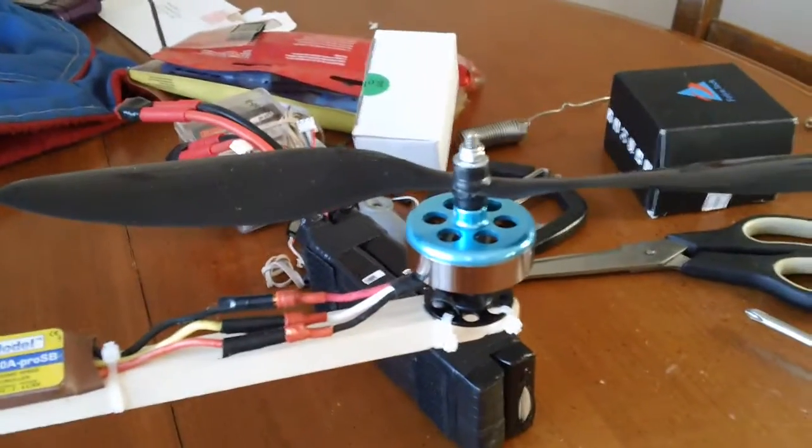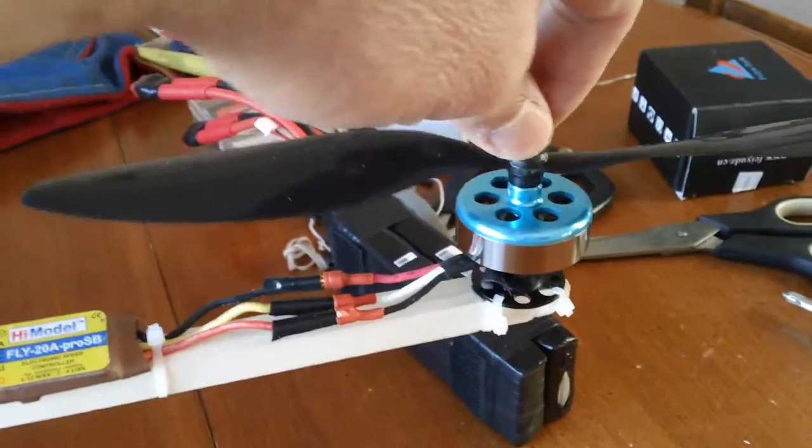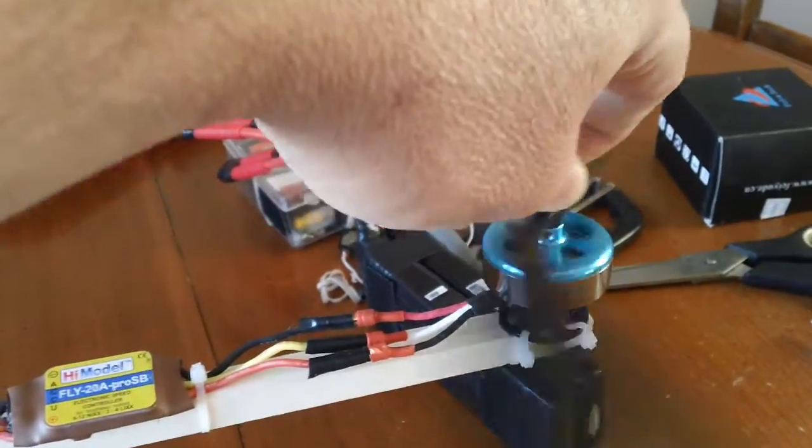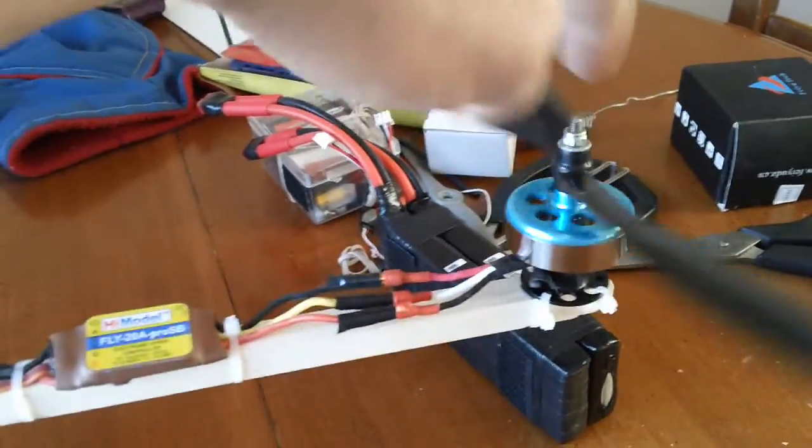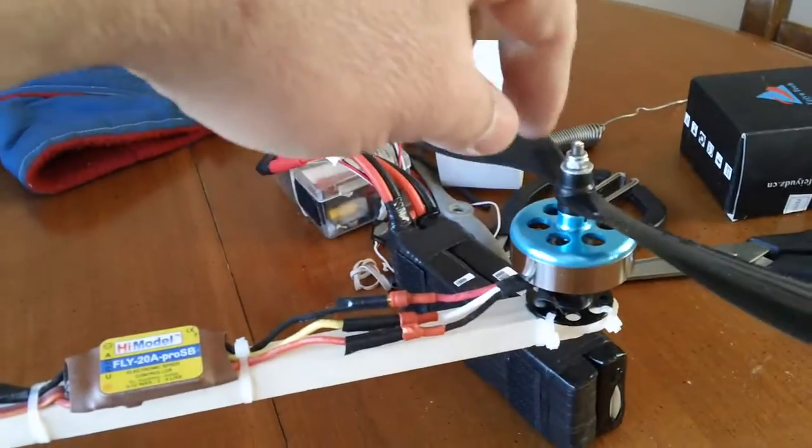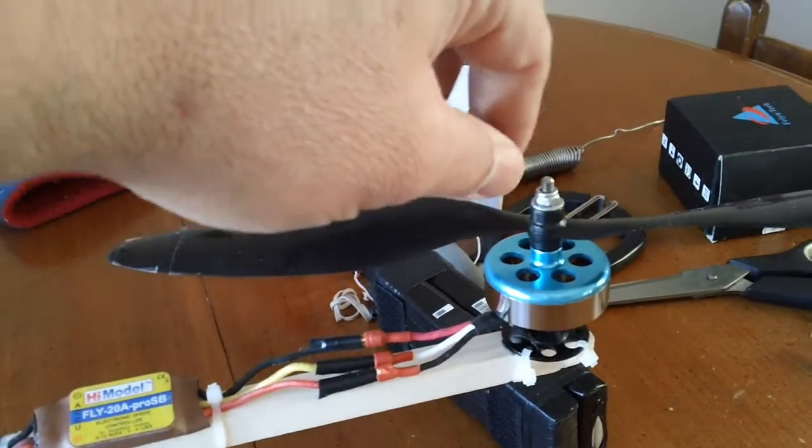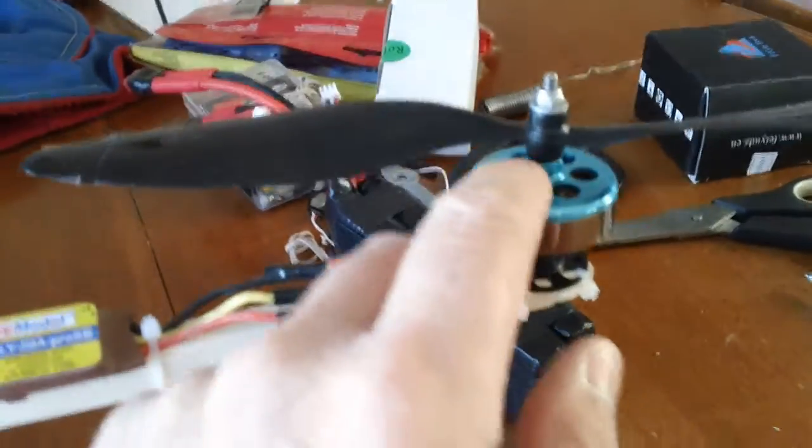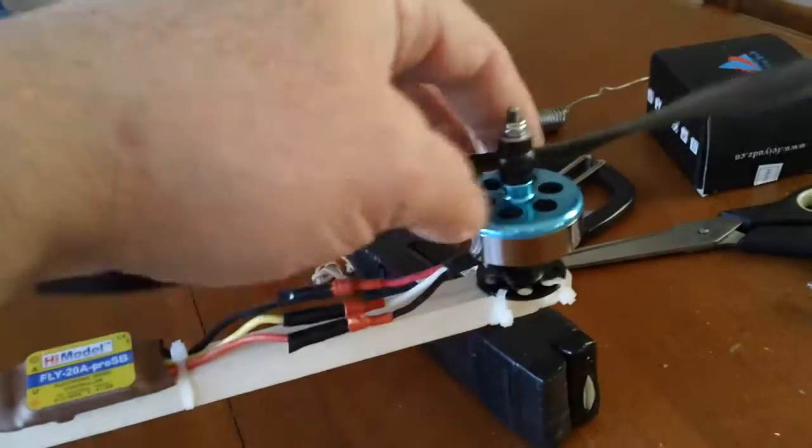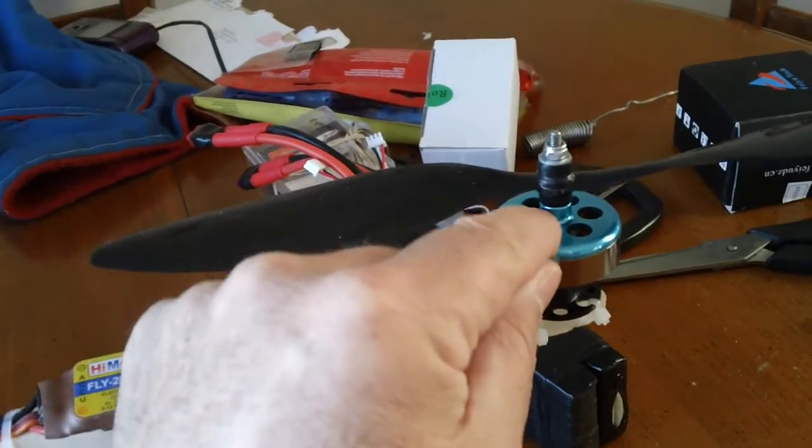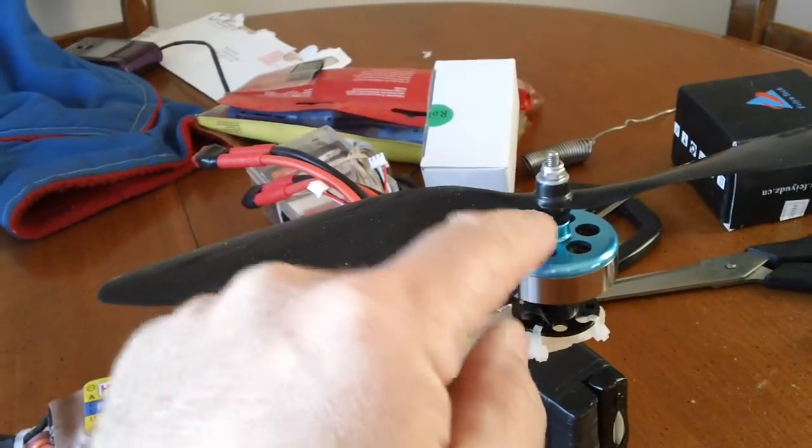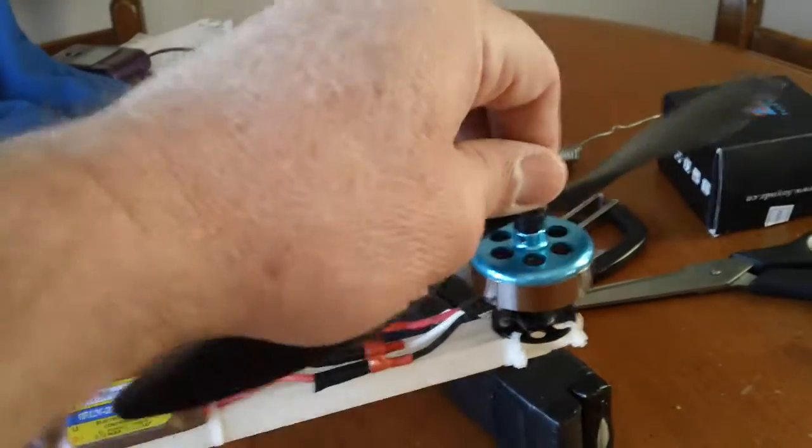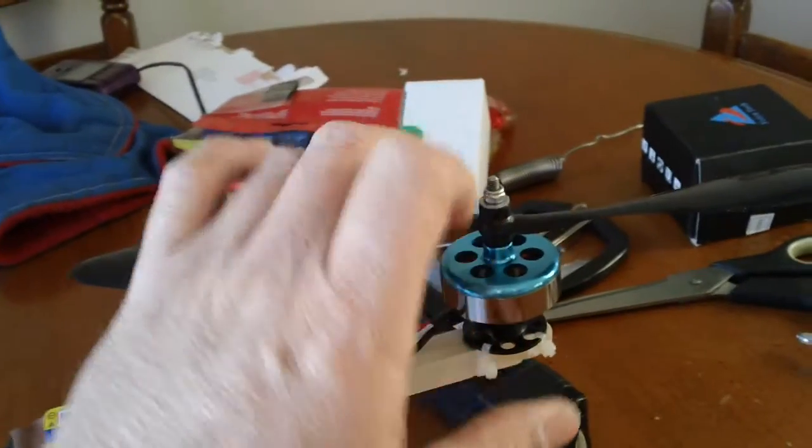One thing about the motors, these shafts are pretty weak. They're the weak point in the motor. And if anything is going to break or bend it's going to be the shaft. So you have to take this bell off and put a little notch so that grub screw holds better so when you tighten it up it doesn't compress the bearing too much.